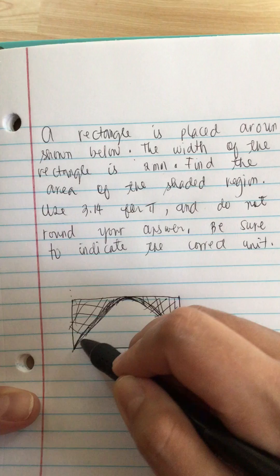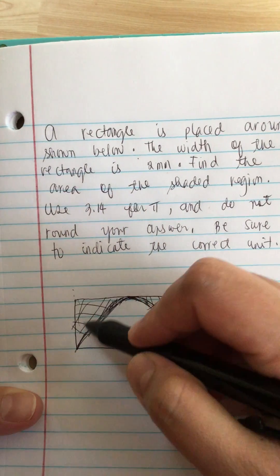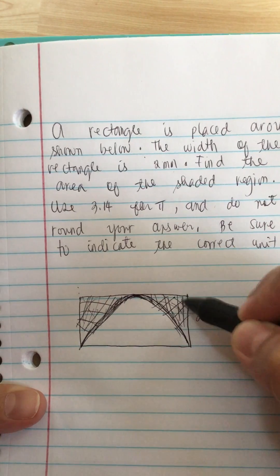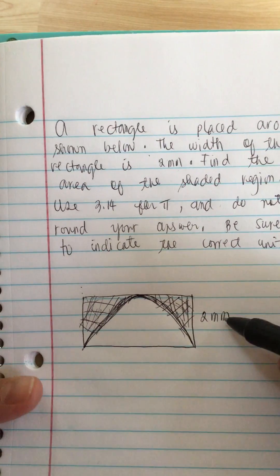So this is a semicircle. Apologize for my drawing. And this is the shaded region. And this is the rectangle and this is 2mm.